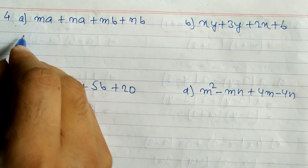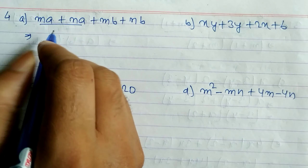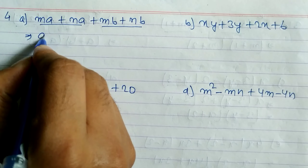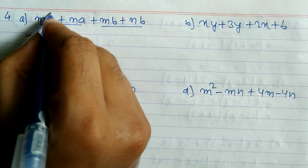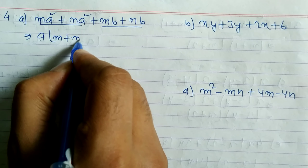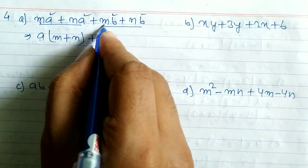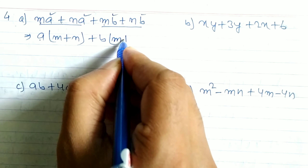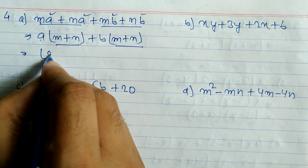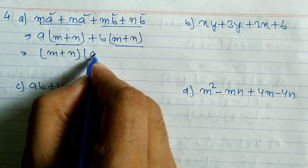Now look at question 4a. There are 4 terms here, so we take common from two terms at a time. From the first two terms, a is common, remaining m plus n. From the next two terms, b is common, remaining m plus n. Now m plus n appears in both, so we take m plus n as common, remaining a plus b. So the answer is (m plus n)(a plus b).